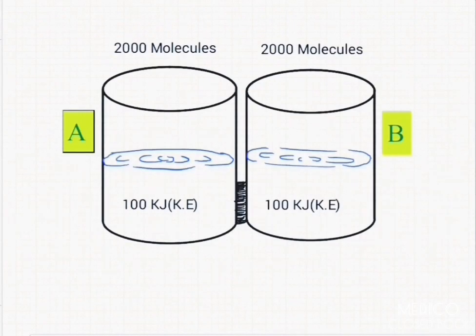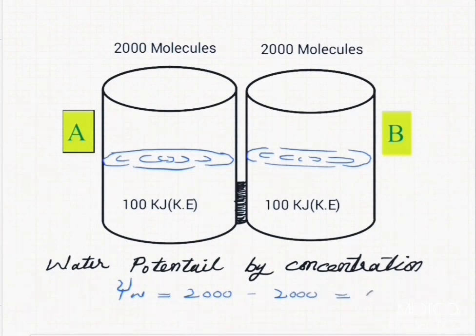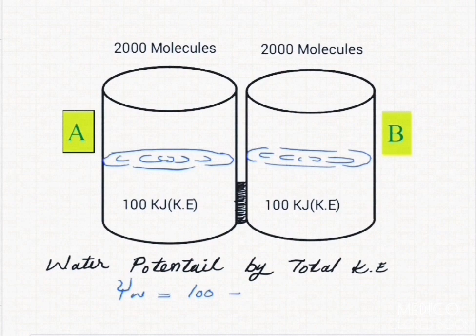The water potential of solution is taken as a negative value because it has low water potential. For example, consider two beakers both having 200 free molecules of water — the water potential by concentration of water molecules is taken as zero, and by total kinetic energy of the systems both containers are having 100 kJ energy, so that is zero.